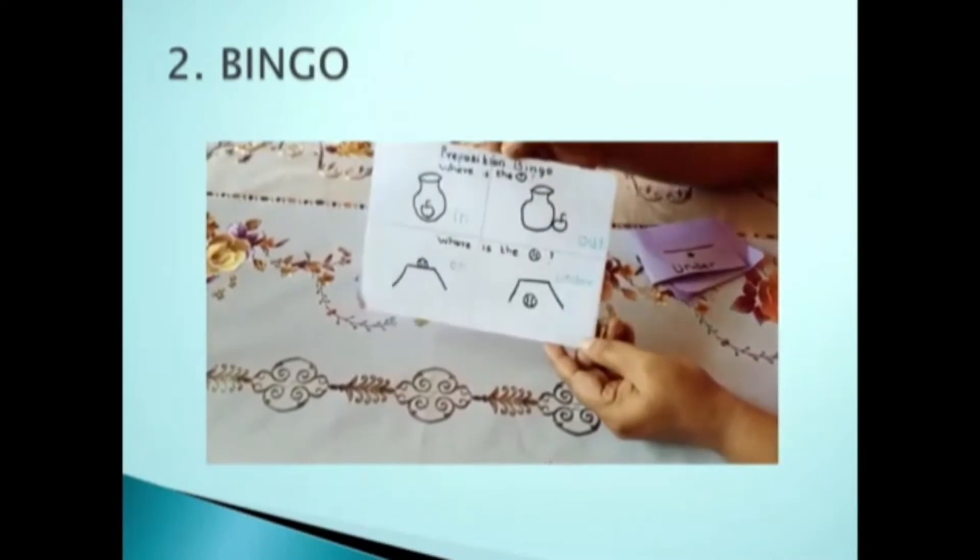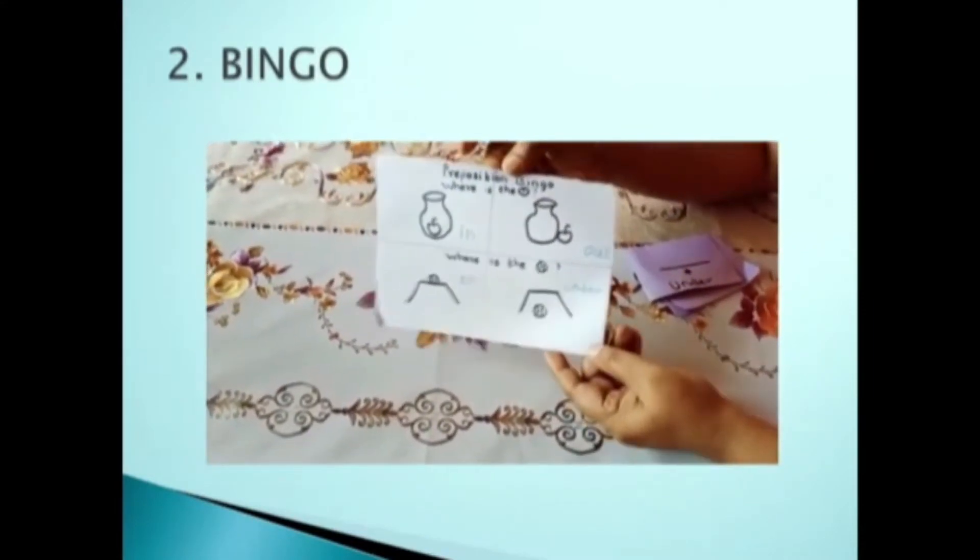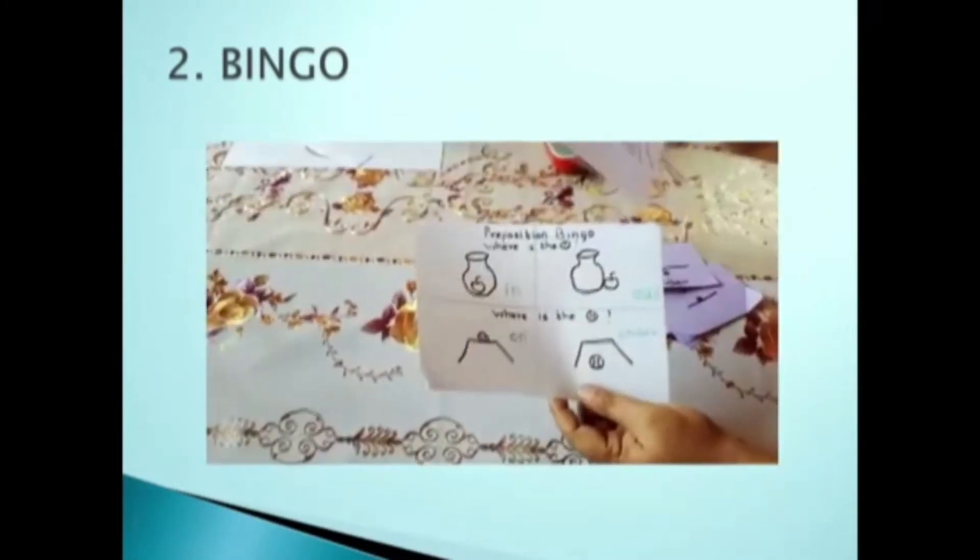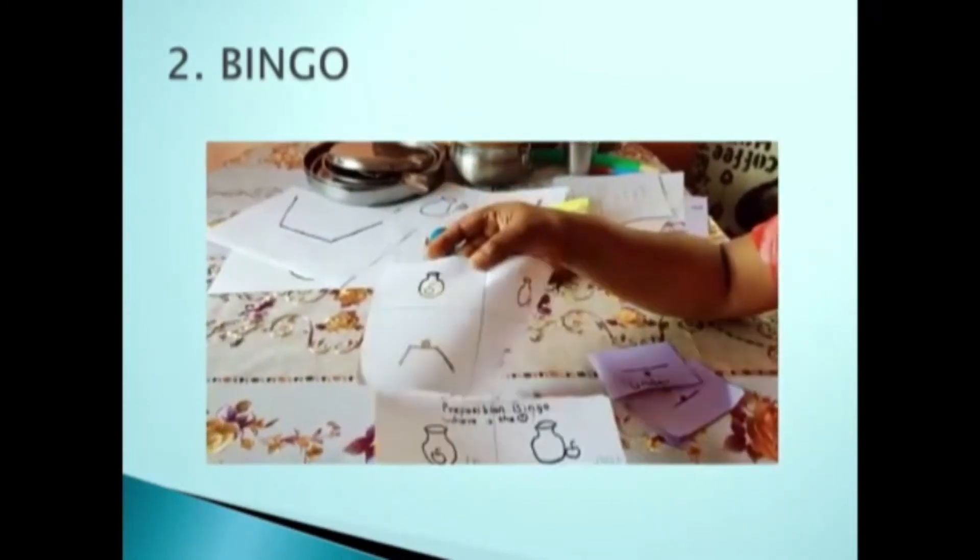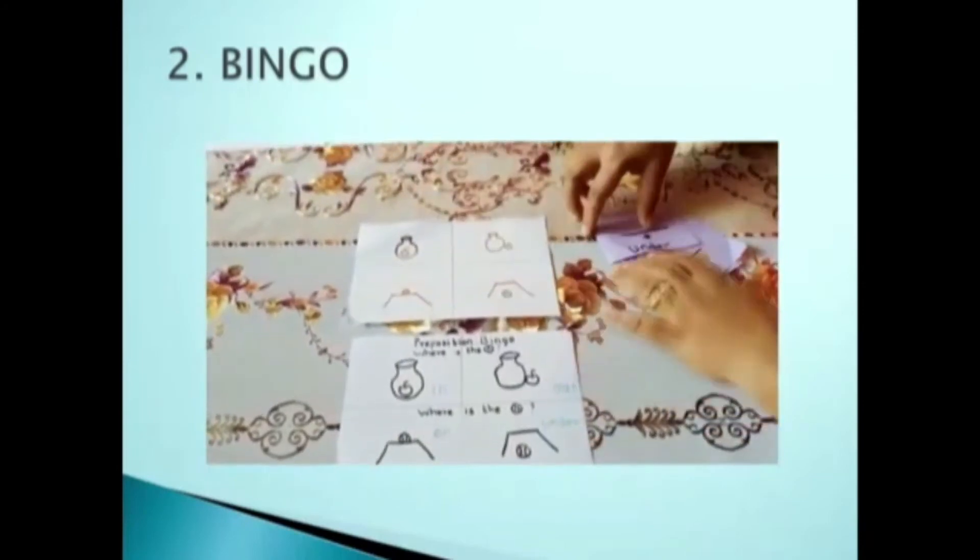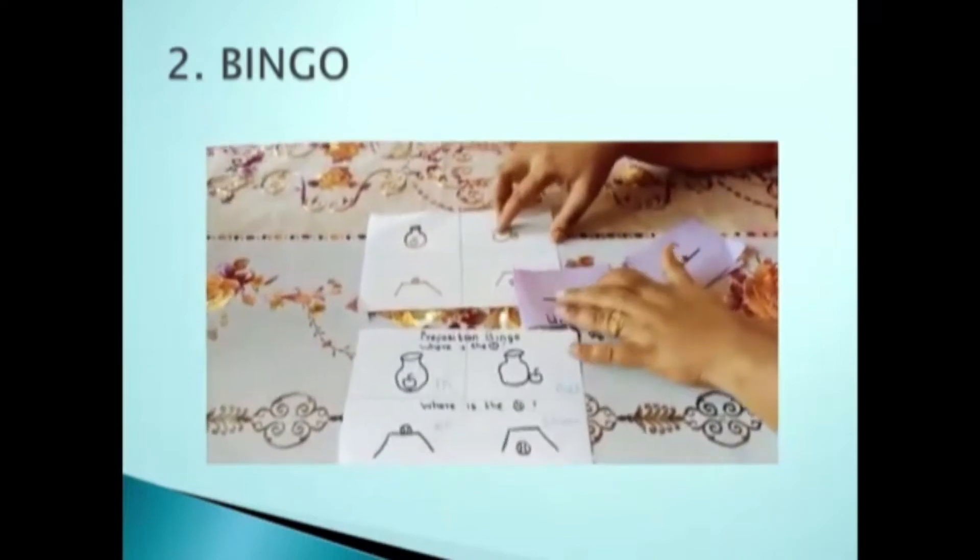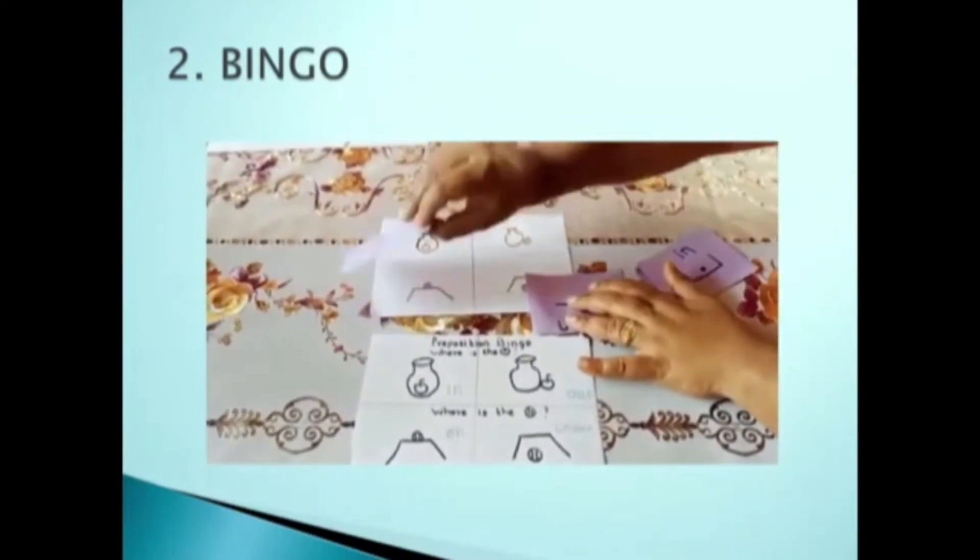The third activity is a prepositions bingo. In one flashcard, we write the answers. In the other flashcards, it is blank. The child has to place the answers in this way, on the bingo card.